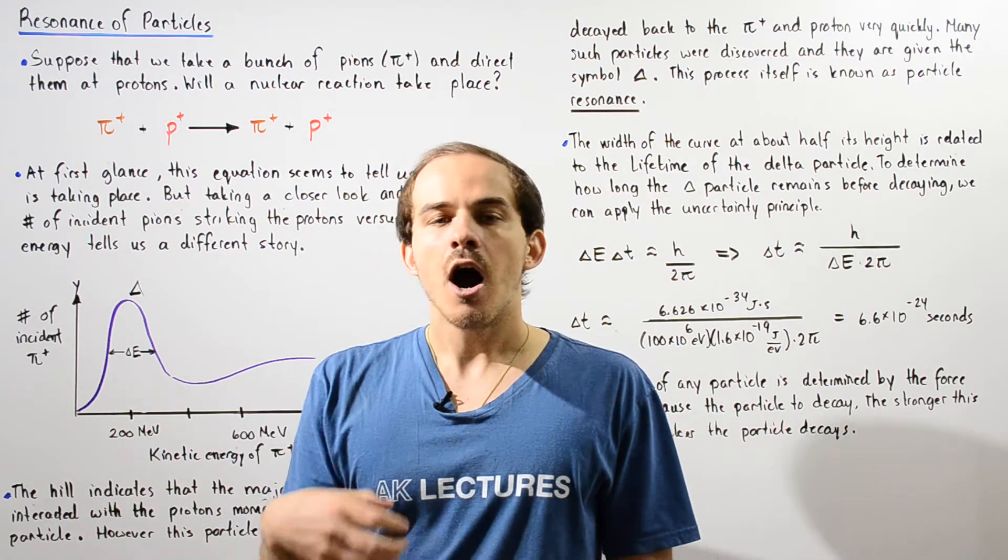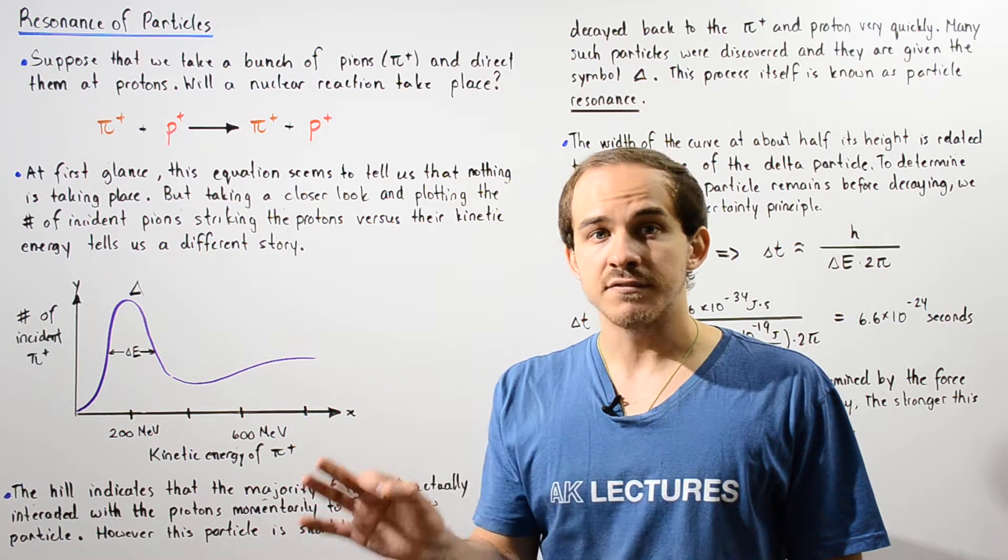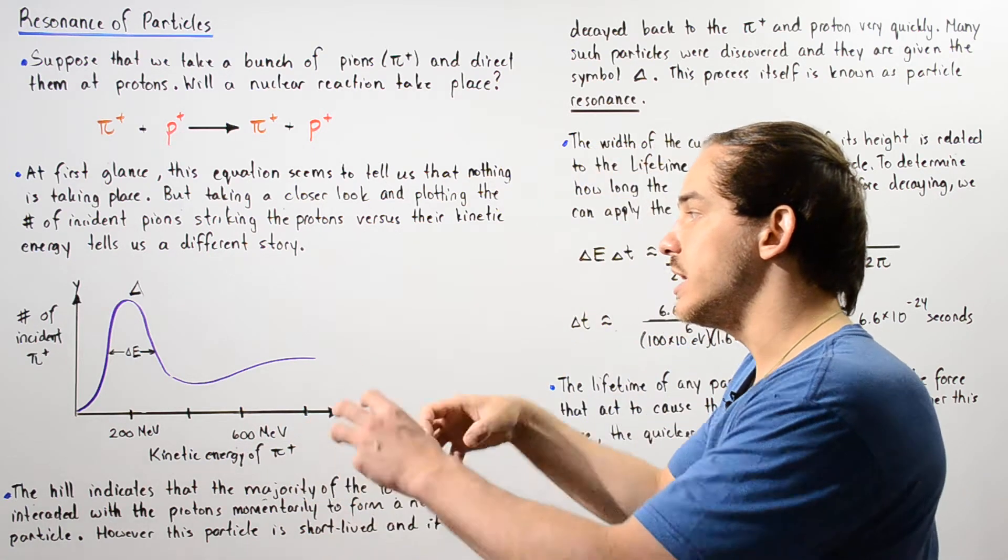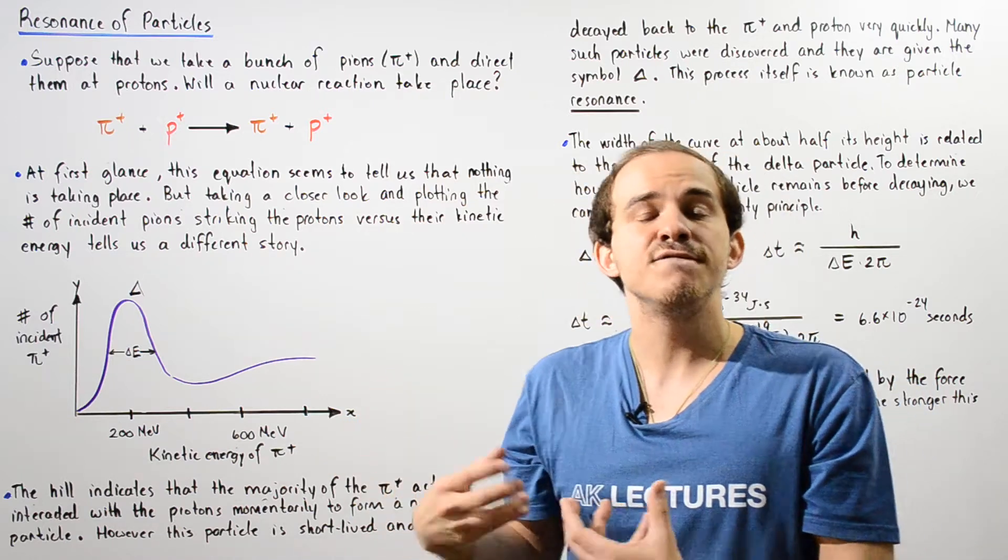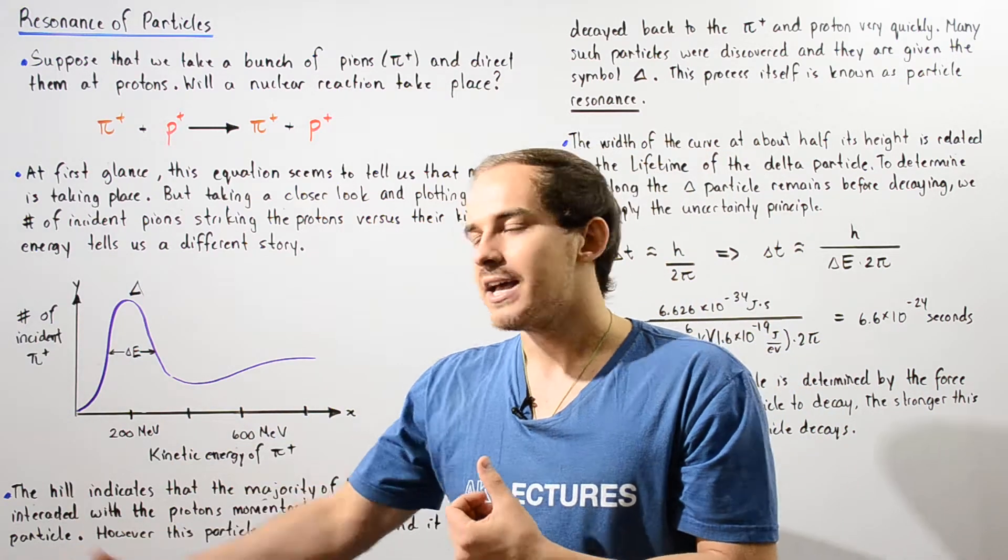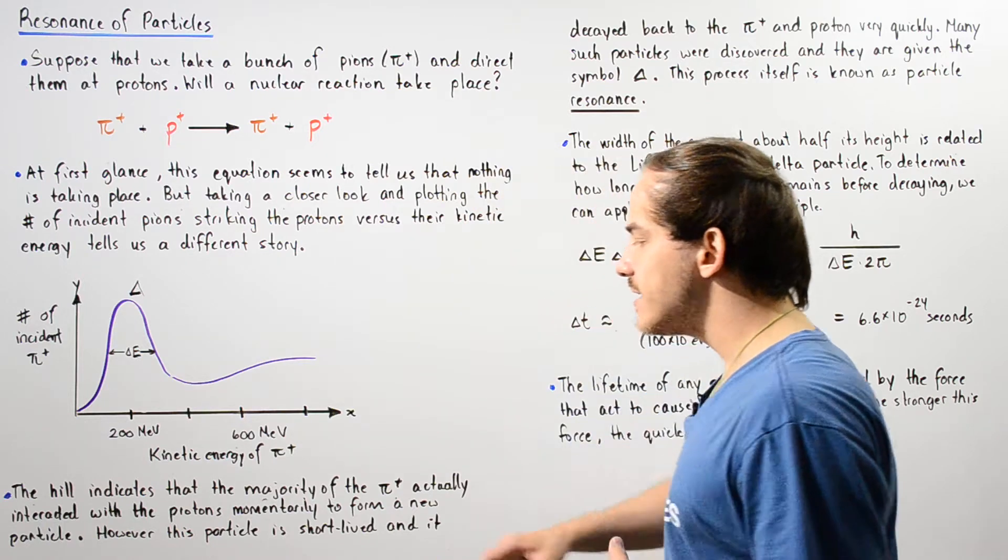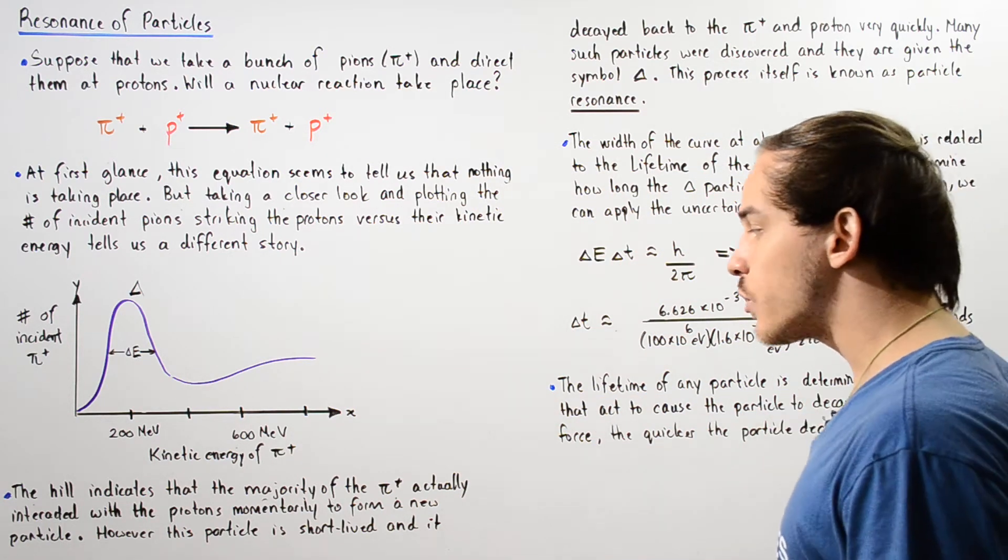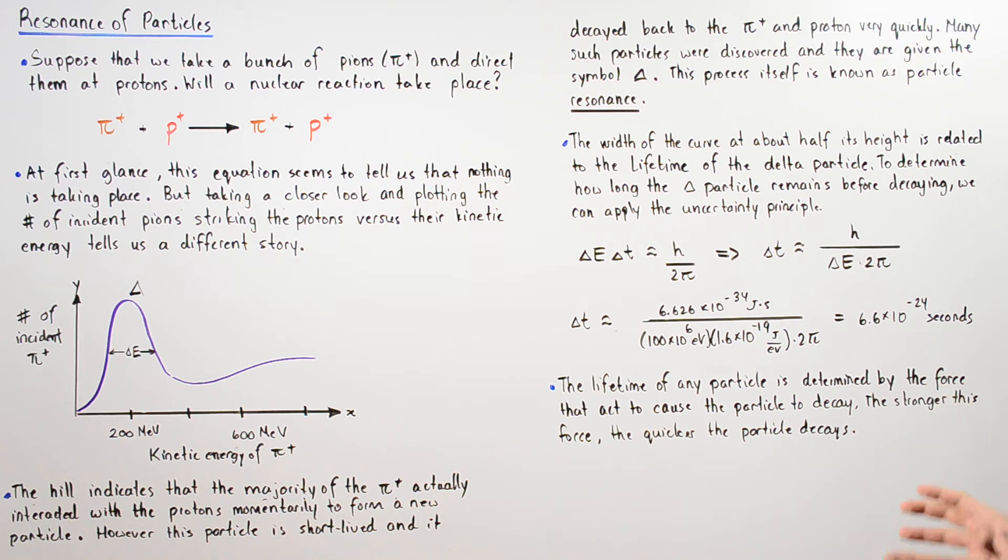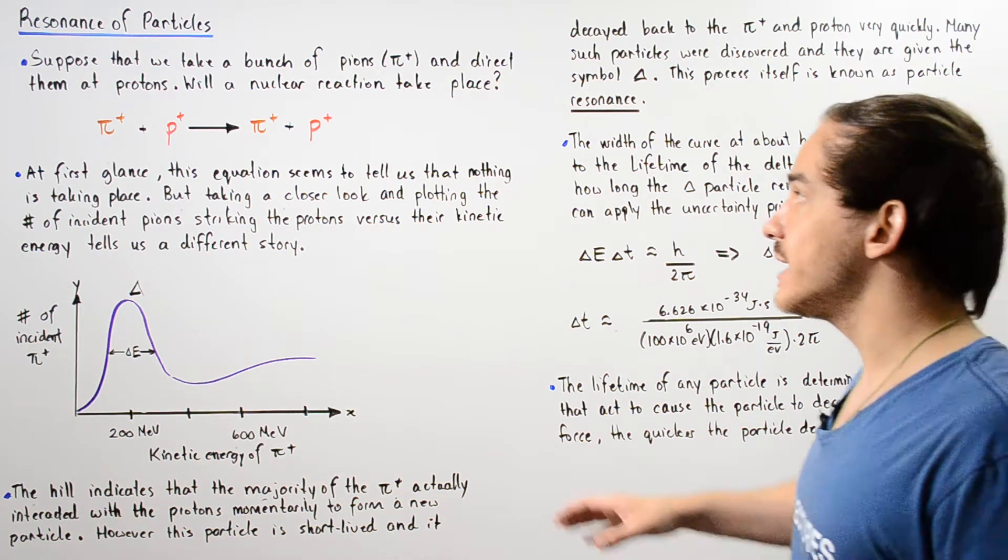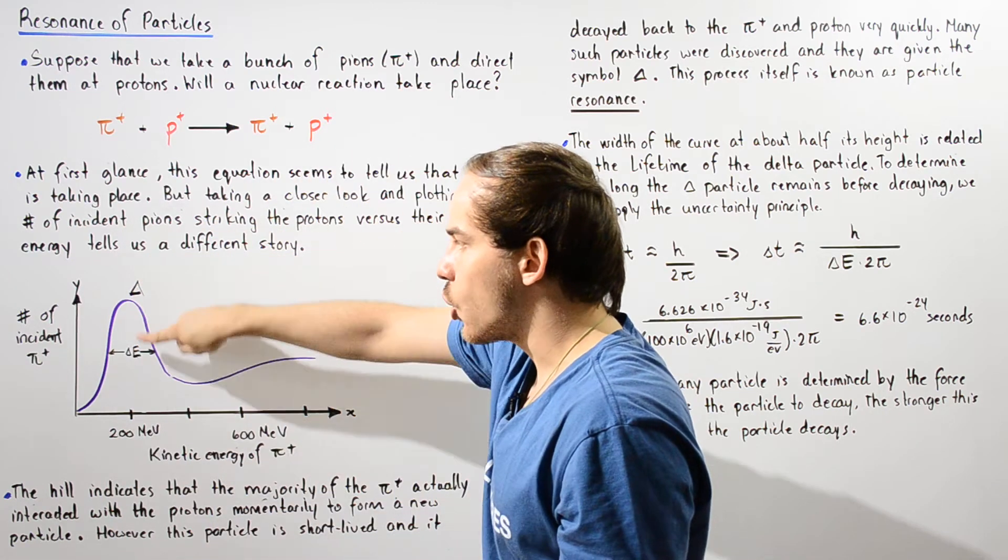And when this interaction takes place, momentarily a new particle is formed. Now this particle exists for such a short period of time that we cannot actually observe this particle, and that's exactly why we don't show it in this state. Basically, this particle is very unstable and it decays instantaneously. So once again, the hill indicates that the majority of the pions actually do interact with the protons momentarily to form a new particle. However, this particle is short-lived and decays back to our pion and proton. So we see these do combine momentarily, and that is shown by this hill.